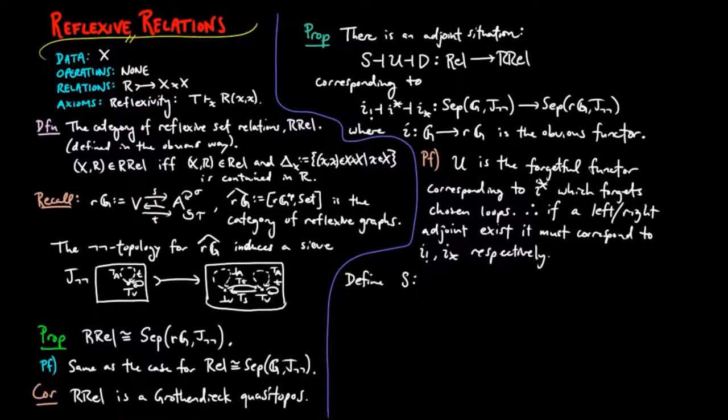So we define S on objects by taking XR to XR union the diagonal on X, where the diagonal on X is the set of reflexive pairs of X,